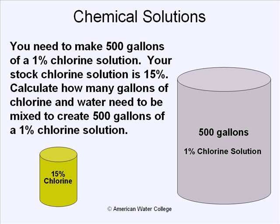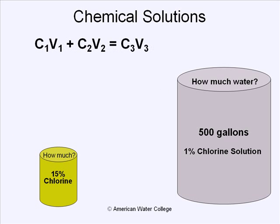We need to know how much 15% chlorine and how much water to mix together to give us 500 gallons of a 1% chlorine solution. To do this, we're going to use a chemical solution formula, which reads: the concentration and volume of solution 1, added to the concentration and volume of solution 2, will equal the concentration and volume of solution 3. In this case, solution 1 is the 15% chlorine.